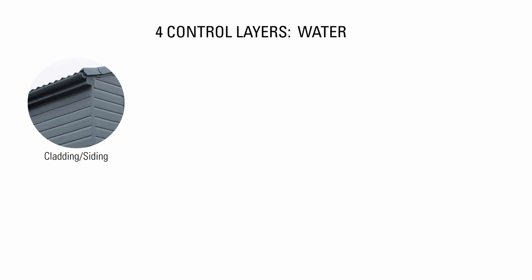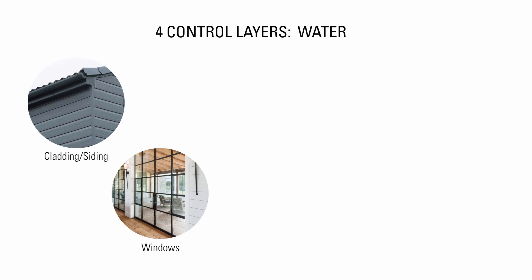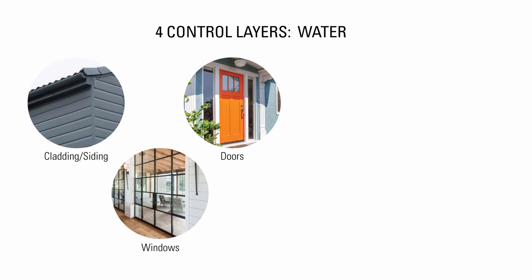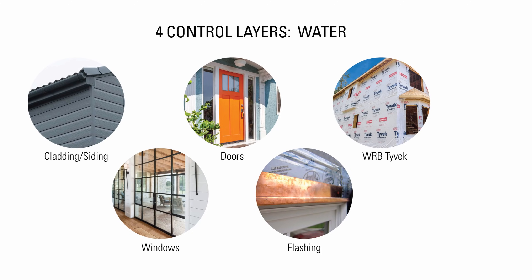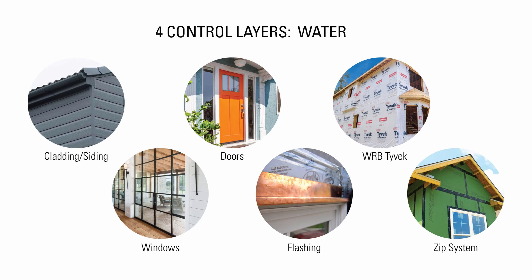The exterior walls of a building are responsible for controlling four main differences between the conditioned indoor and the unconditioned outdoor environments. The first and most important is water, which is controlled with cladding or siding, windows, doors, flashing and a water-resistive barrier like Tyvek and Zip System.